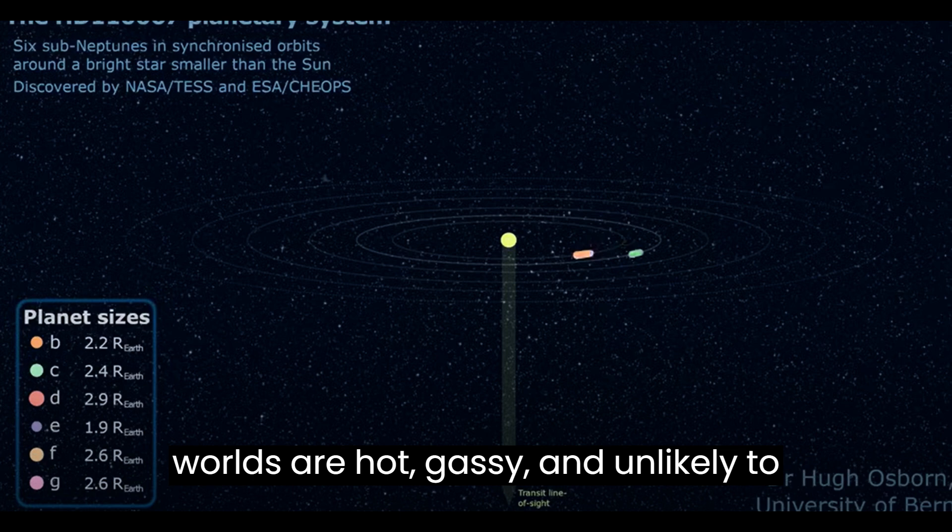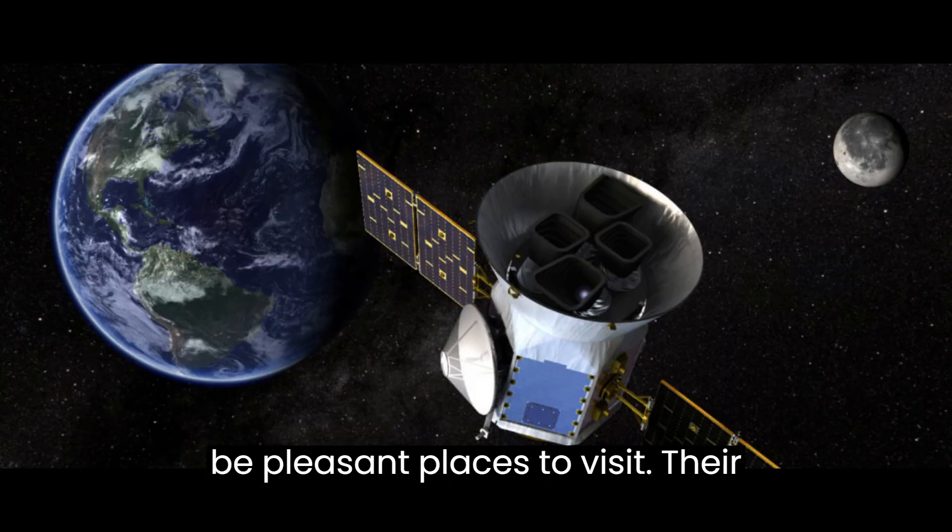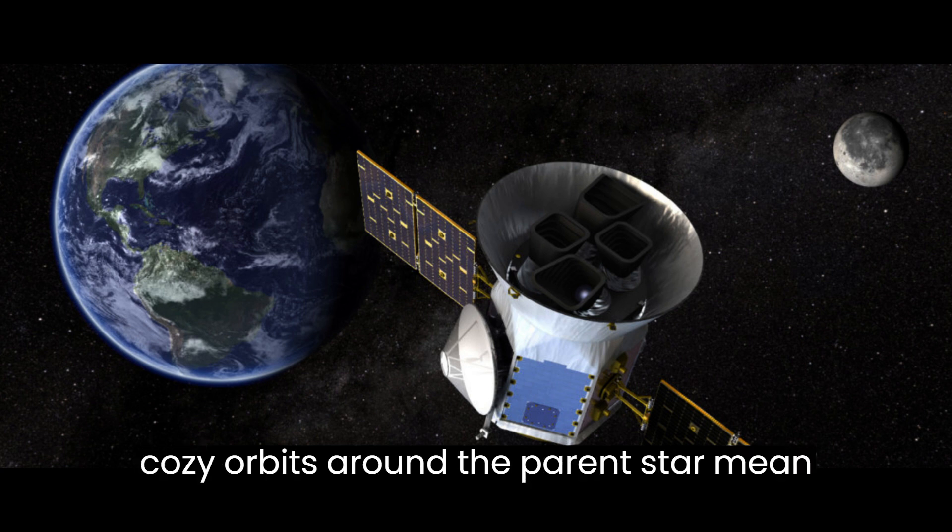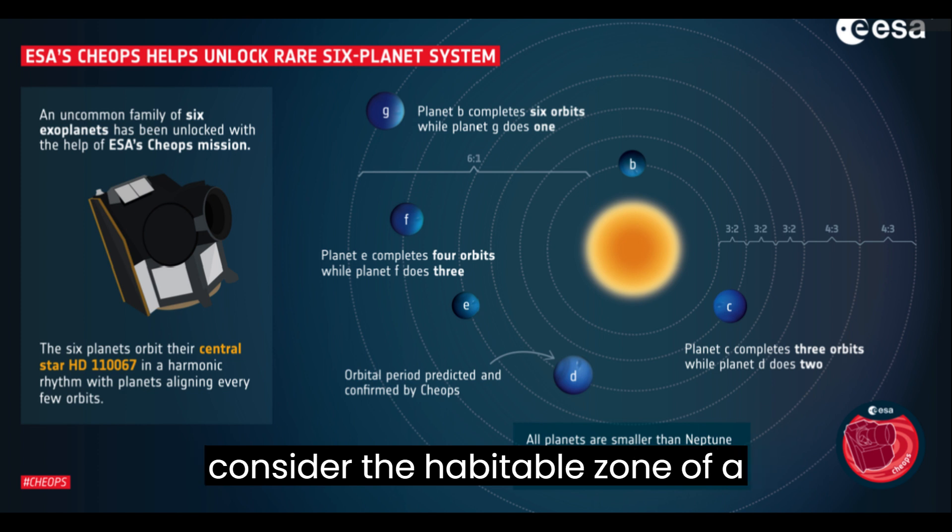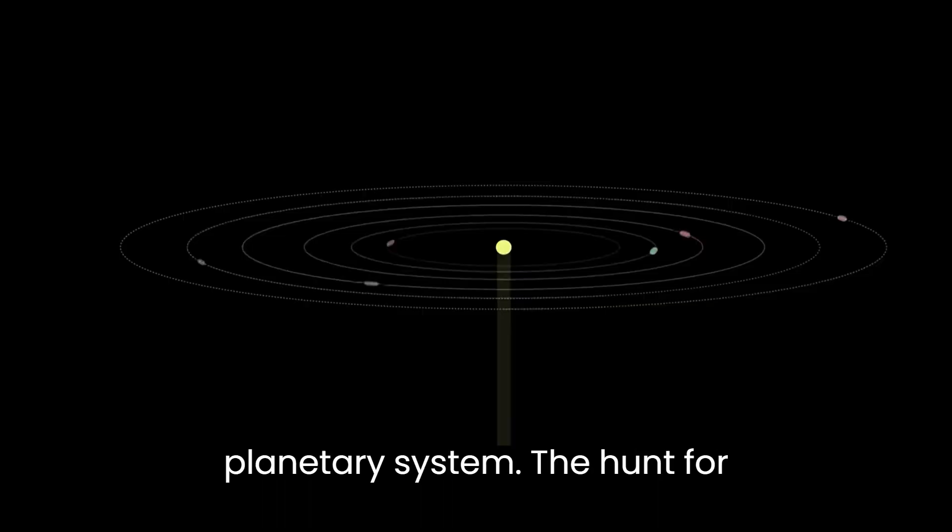These newfound worlds are hot, gassy and unlikely to be pleasant places to visit. Their cozy orbits around the parent star mean they are not in what astrobiologists consider the habitable zone of a planetary system. The hunt for Earth 2.0 goes on.